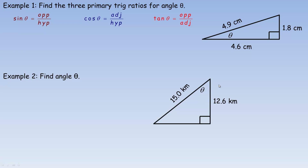We're going to take a look at some examples of how you use the trigonometric ratios to find unknown sides and angles. The first one, we're just asked to write the three primary trig ratios for this angle theta. We're given that this side is 4.6, this is 1.8, and this is 4.9. The 1.8 is across from the angle, so that's the opposite side. The 4.9 is the hypotenuse, and 4.6 is the adjacent side beside the angle.